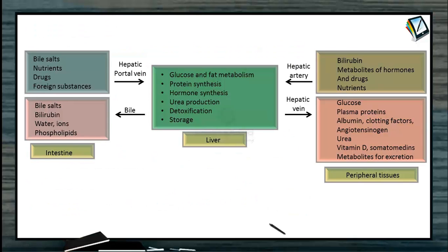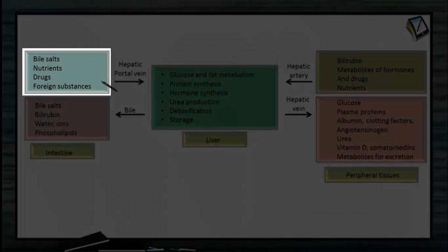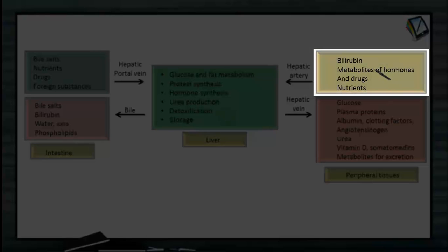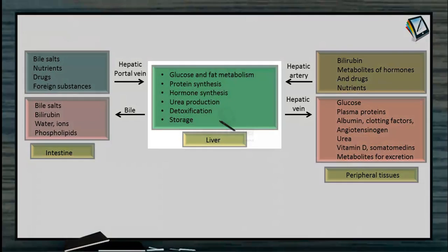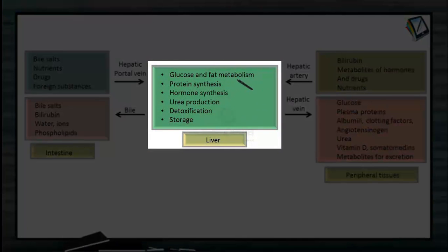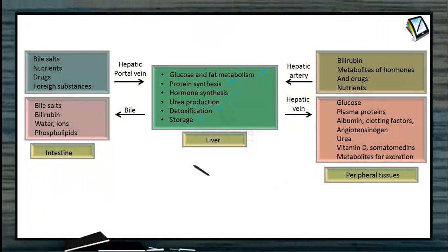To summarize the functioning of the liver: the hepatic portal vein brings nutrients, drugs, foreign particles, and bile salts, while blood in the hepatic artery is rich in bilirubin, hormone metabolites, and nutrients. Inside the liver, glucose and fat metabolism, protein synthesis, hormone synthesis, urea production, and detoxification occur. Excess nutrients are stored in the liver. After breakdown of old RBCs, certain metabolites are synthesized by liver cells — together these are called bile.